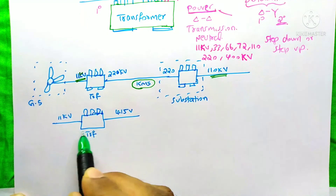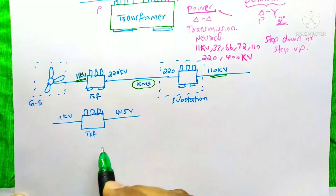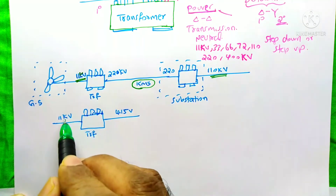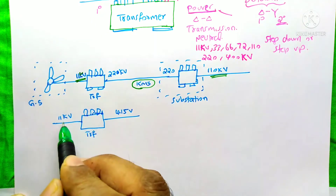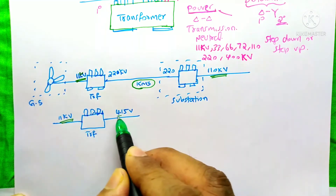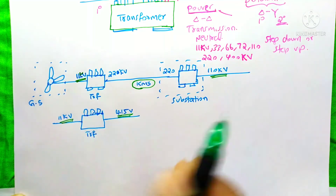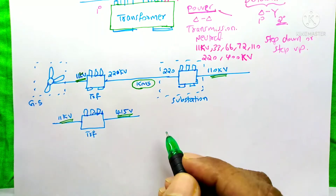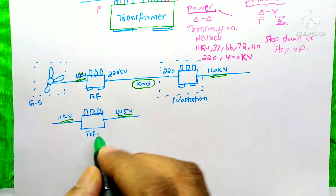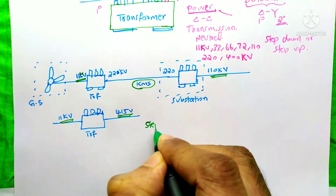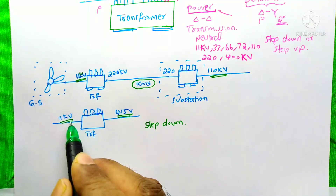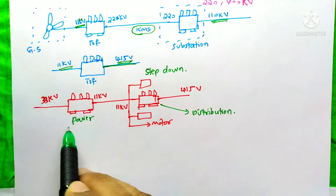Here is a distribution transformer. The distribution transformer always handles the voltage level of 11 kV and 415 V — this generally happens in industry. The distribution transformer is always a step-down transformer; the 11 kV is converted to 415 volts.